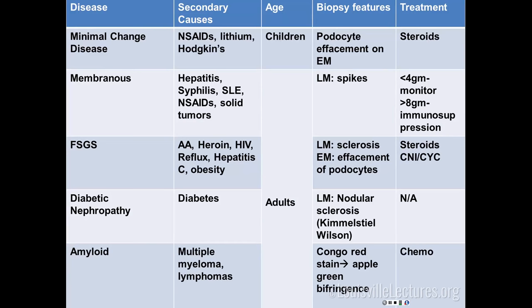FSGS is more commonly seen in African-Americans — if they give you an African-American patient with nephrotic syndrome, think FSGS. Secondary causes include heroin, HIV, reflux, hepatitis, and obesity. On biopsy under light microscopy, you'll see a bunch of glomeruli but only some will have focal sclerosis. Treatment is the same as minimal change disease because they're on the same spectrum — both are podocytopathies. You treat with steroids.